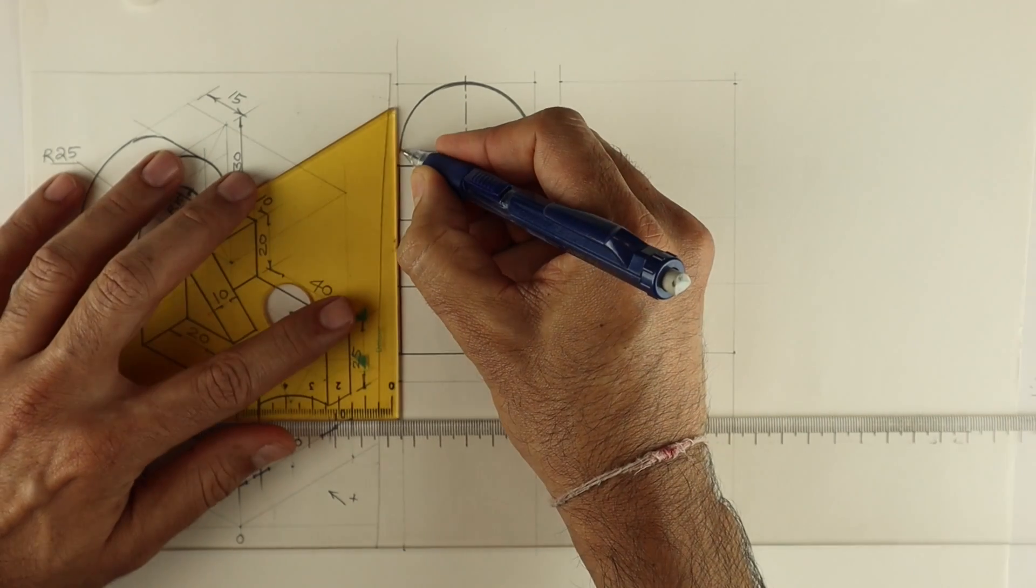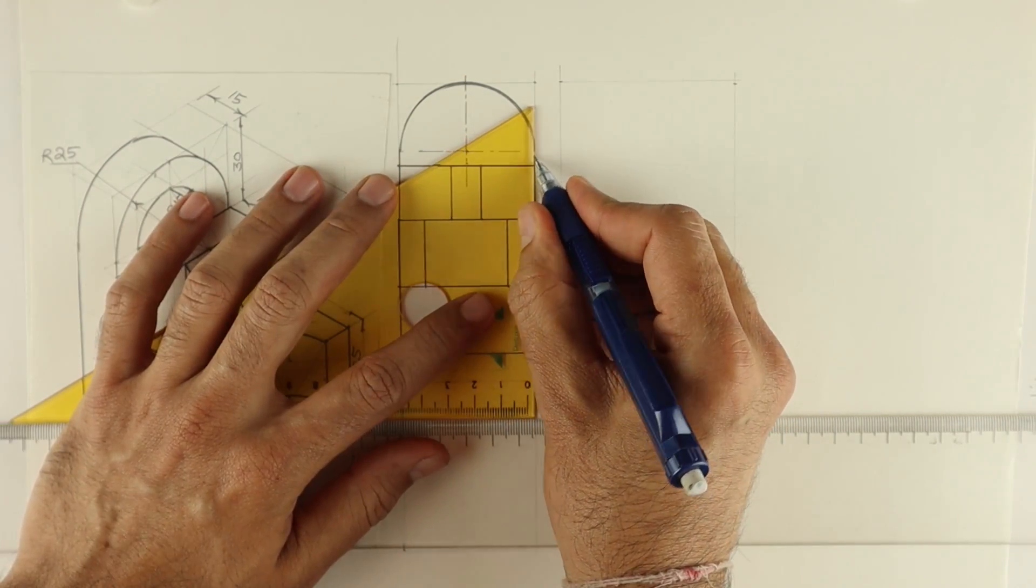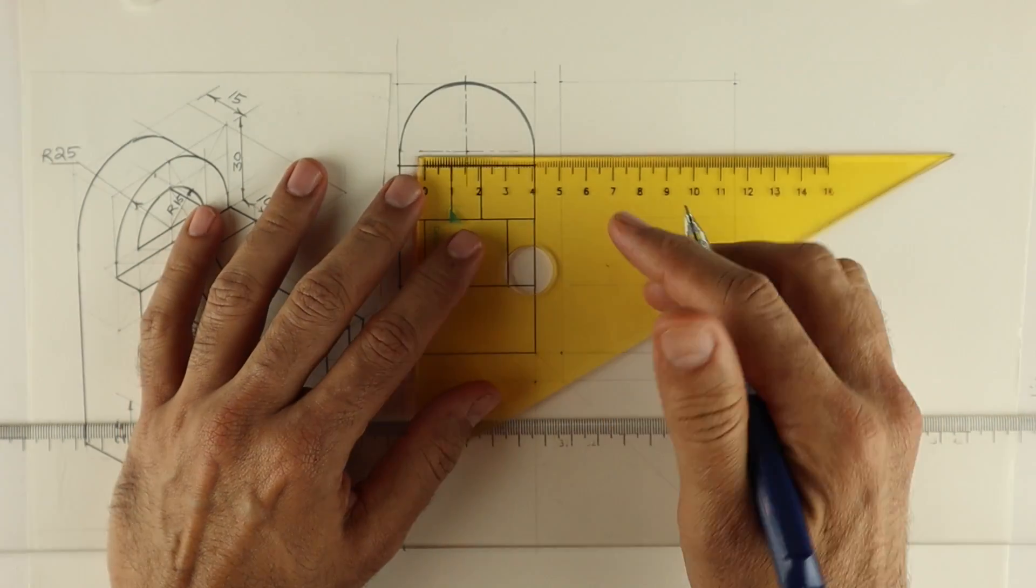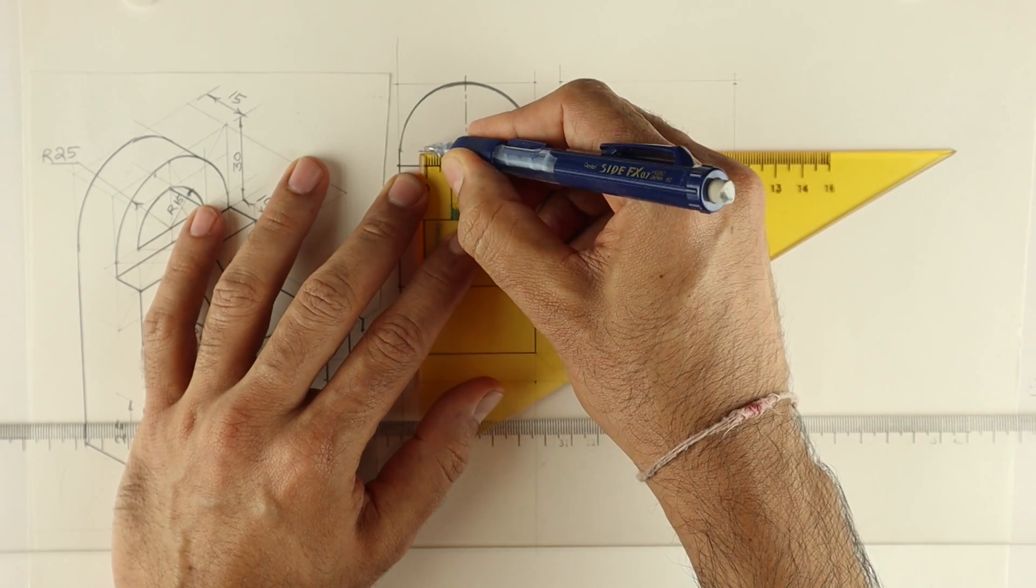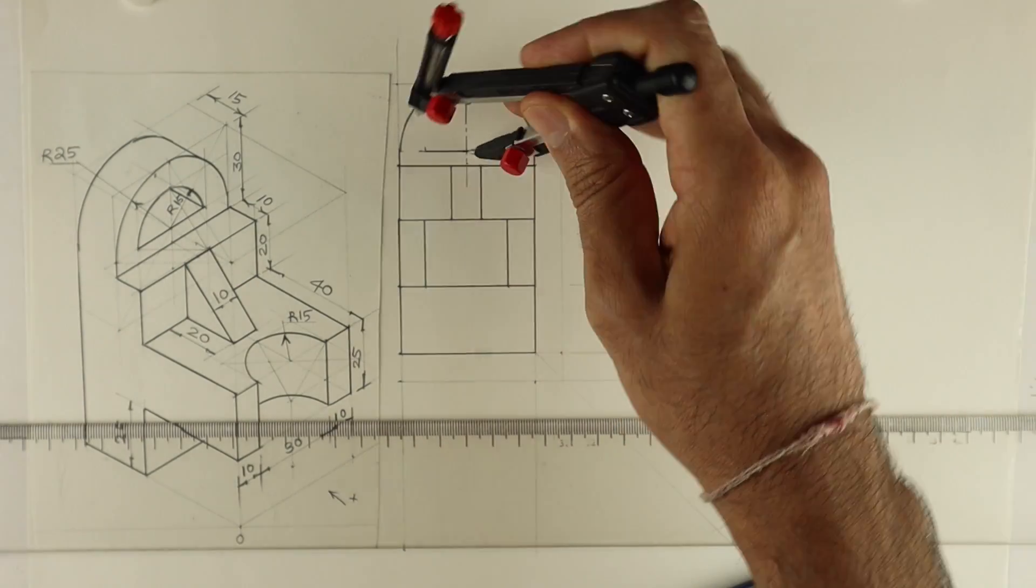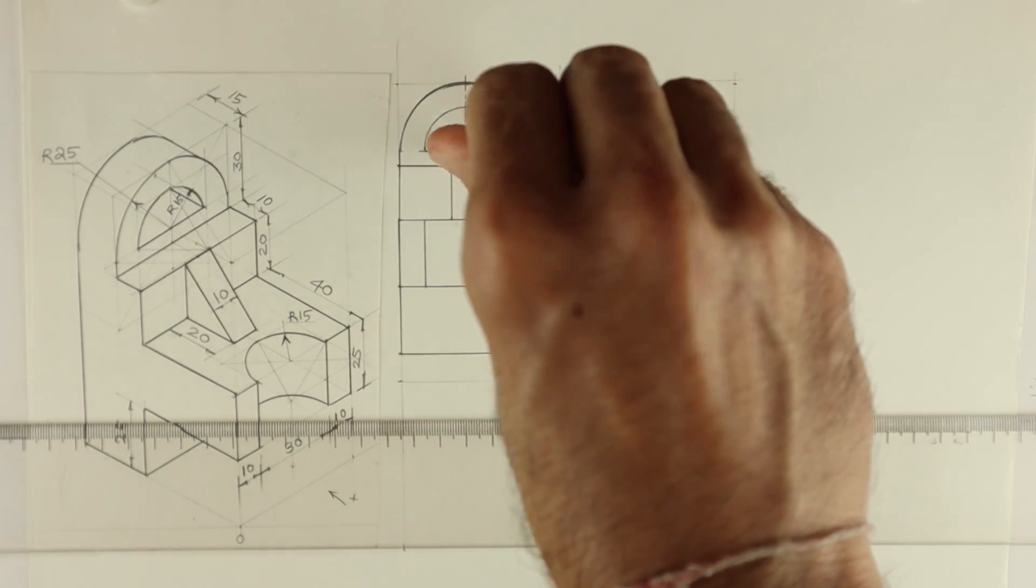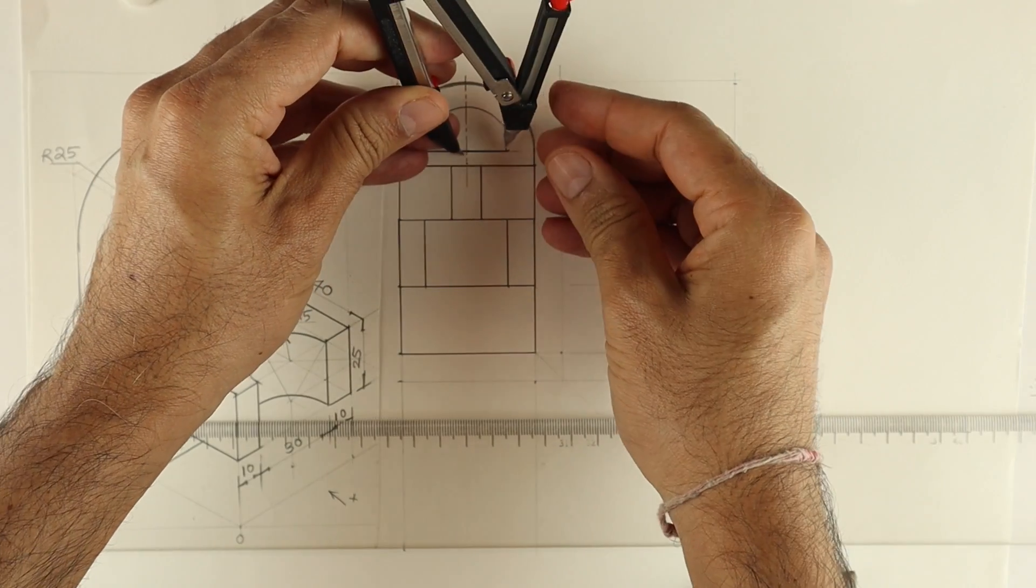Now there is one more circle of radius 15. See, this is 5mm which I was talking about. Now radius 15, so from center again you take 15, 15 on both the sides, and we can draw half circle like this. So we are done with front view.